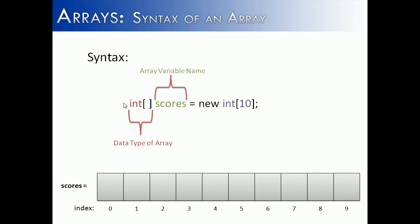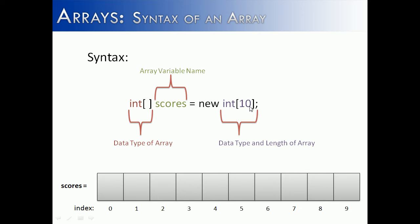The second thing that you do is put the variable name. The variable name can be anything, but hopefully it has something to do with what is being stored inside of the array. Next, we have the keyword new, and what new does is say: okay, I'm going to go find some memory and allocate it. How big is it going to be? It's going to be a length of 10, and it's going to be of the data type integer.